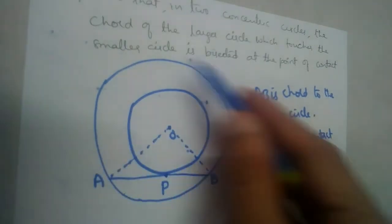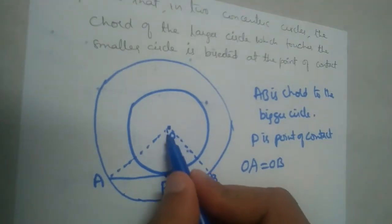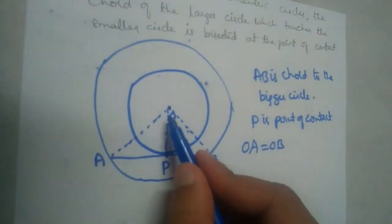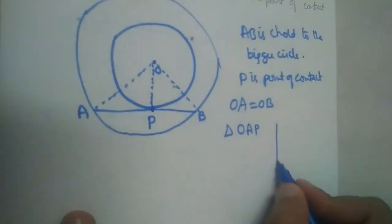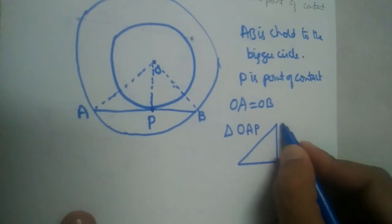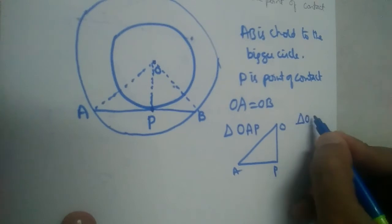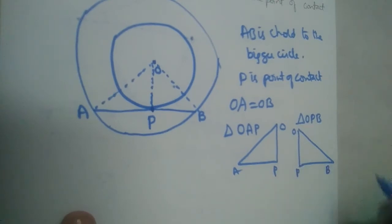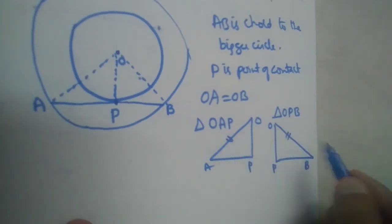If we join O to A and O to B, then OA equals OB because both are radii of the big circle. If we drop a perpendicular here, triangle OAP is formed, and one more triangle OPB is formed. OA and OB — these two sides are equal.